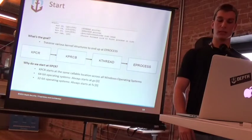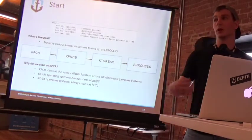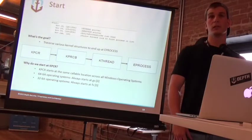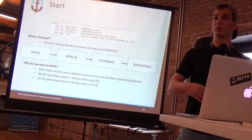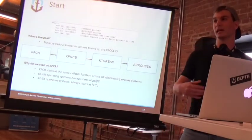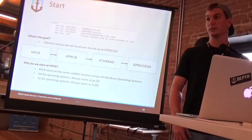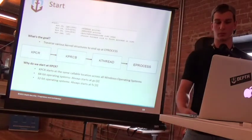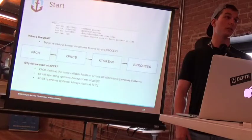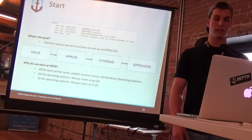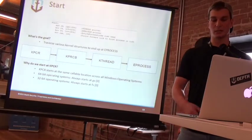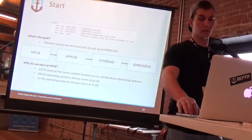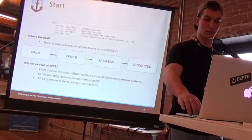There is a reason we start at the KPCR — it actually starts at the same callable location across all Windows operating systems going all the way back to XP. So if you're creating shellcode for this kind of stuff back in the XP days, you followed kind of the same methodology you would nowadays in Windows 10. In 64-bit operating systems like the one we're attacking today, it always starts at GS segment 0x0, which is basically just GS at zero. In 32-bit operating systems it starts at FS segment 0x0.